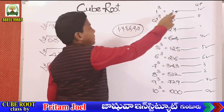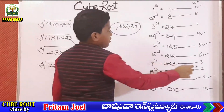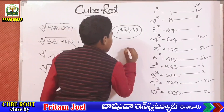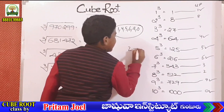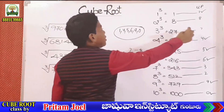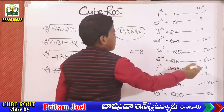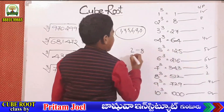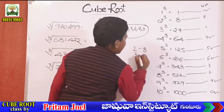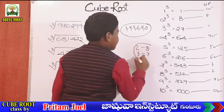2 cube's unit digit is 8, and 8 cube's unit digit is 2. Similarly, 3 cube's unit digit is 7, and 7 cube's unit digit is 3 — meaning 3 and 7 swap with each other.